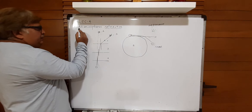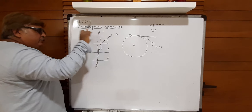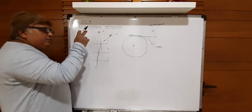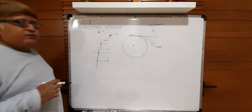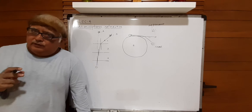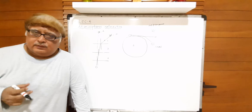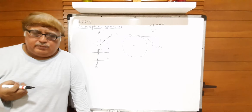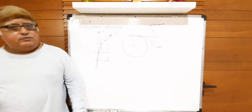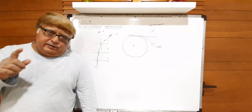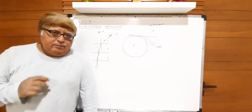Let me clarify the meaning of atmospheric refraction. Before we study phenomena that take place due to atmospheric refraction, let me explain why atmospheric refraction takes place. The word itself implies: atmospheric refraction means refraction has to take place in the atmosphere. My dear students, you all know that our earth is surrounded by a thin layer of atmosphere.